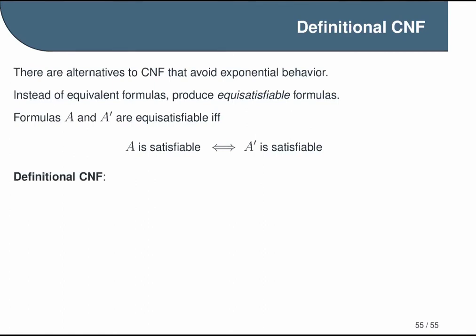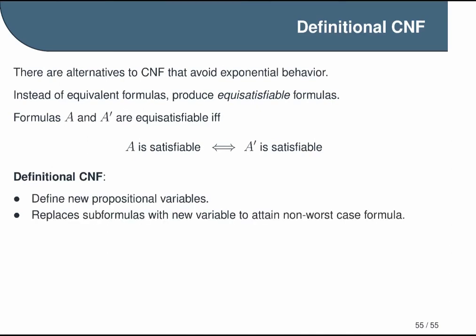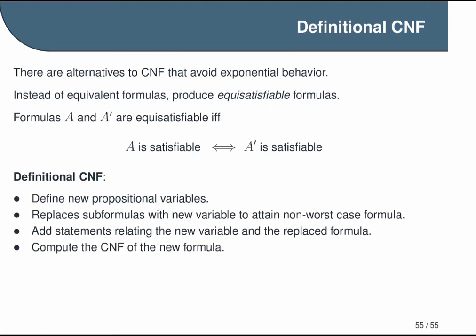Now the basic idea of definitional CNF is that before we compute the CNF, we do some preparation. We define new propositional variables, and we replace our problematic subformulas with these new variables to get rid of the worst case scenarios we were trying to avoid. Then we have to add some statements that relate the new variables to the formulas we replaced. The purpose of these is to guarantee that our new formula is satisfiable if and only if the previous formula was satisfiable. And then finally, we compute the CNF of this new formula.